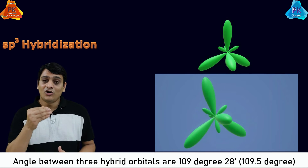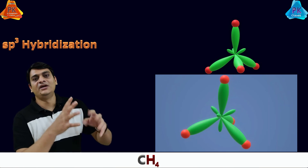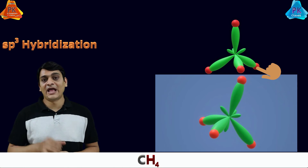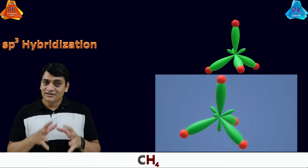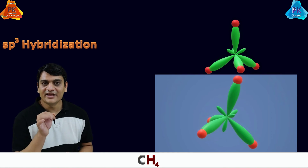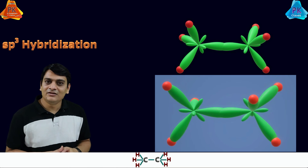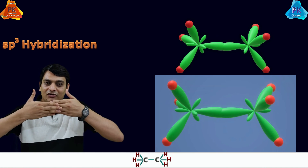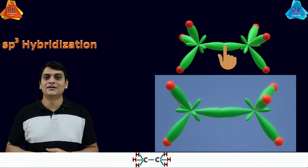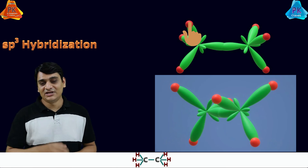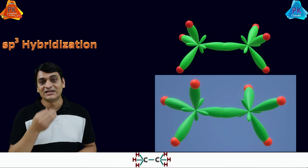In certain conditions this bond angle may change. For methane, 4 hydrogen atoms overlap with the 4 hybrid orbitals of carbon, giving the tetrahedral 3D structure of methane. For ethane, each of the 2 carbon atoms forms 4 hybrid orbitals, and both carbons overlap — each carbon forming 4 sigma bonds: 3 with hydrogen atoms and 1 with the adjacent carbon atom.